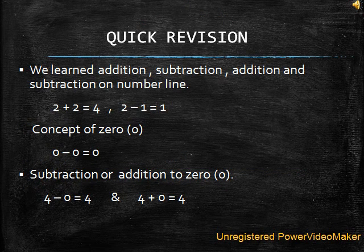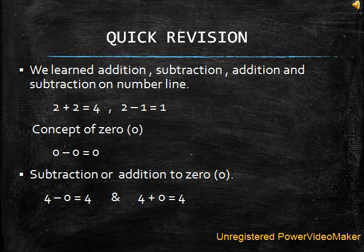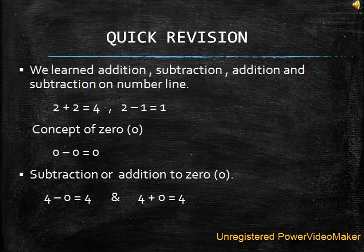Students, let's have a quick revision of what we learned before summer vacations. We learned addition, subtraction, addition on number line and subtraction on number line. We also learned the concept of zero — that if we subtract or add any number to zero, the result will be the same as the number which we are adding or subtracting. Here I have given you examples to revise it. Also, last week we did our book work and worksheets related to the same topic.